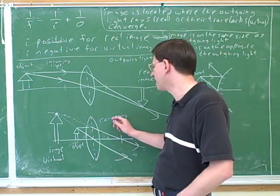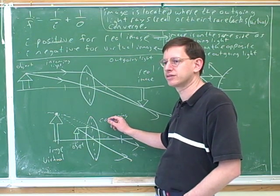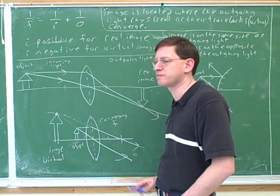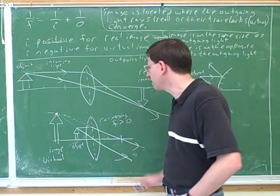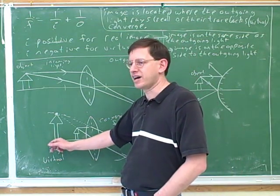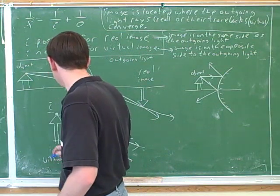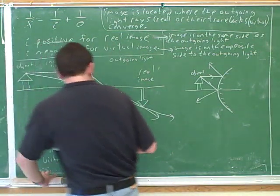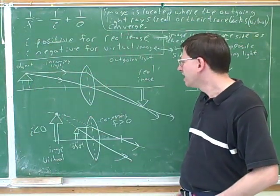What does knowing it's converging tell us about signs? Does it tell us the F or the I? The F. And is it positive or negative? Positive. Now, we also got a virtual image — does that tell us the F or the I? The I. And is it positive or negative? Negative. So this is an excellent example of how a positive F can go with a negative I — we don't want to get those two things confused.